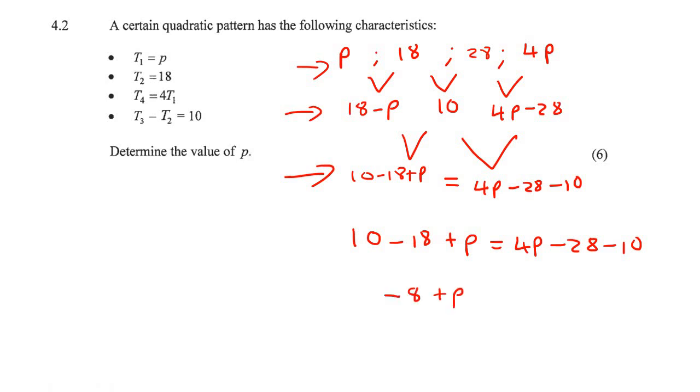So that's going to be minus 8 plus P on the left, and 4P minus 38 on the right, and then we can just solve for P. We can take that to that side, and then this would become minus 8 plus 38, and so 3P is 30, and so therefore P is 10.